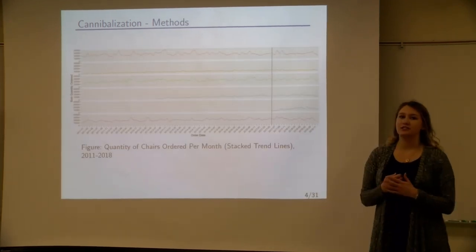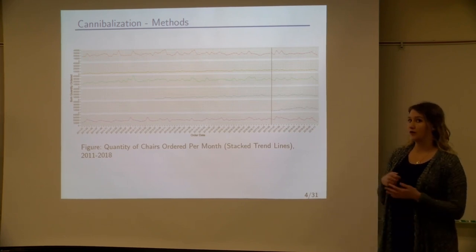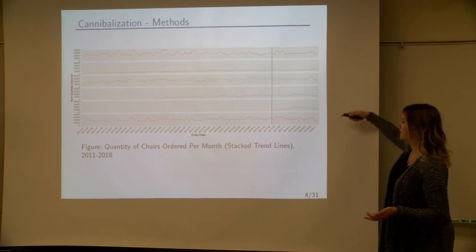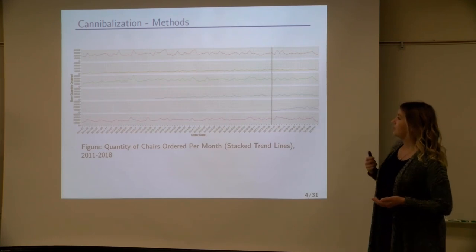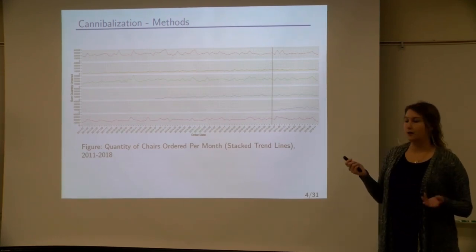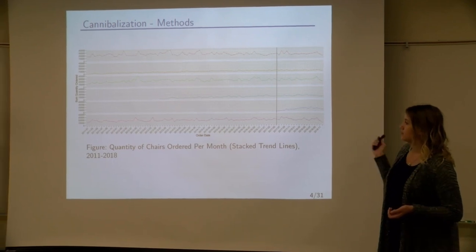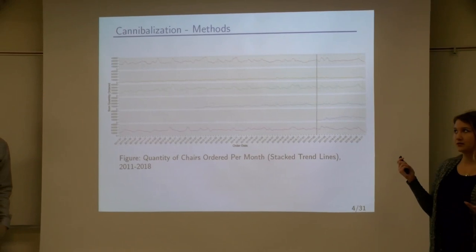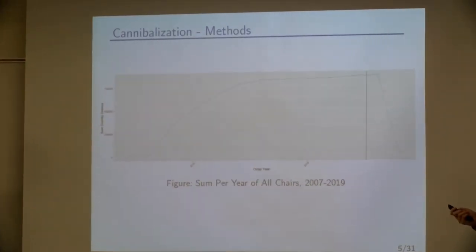So those six chairs of interest we decided to sum the quantity order throughout all the years of the data set given. We decided to make graphs. So each chart on this graph represents one chair. So this vertical black line represents the chair of interest, which was released in 2017. So as you see from this graph, it's very cyclical and we think that's because the chairs, it was summed per month.